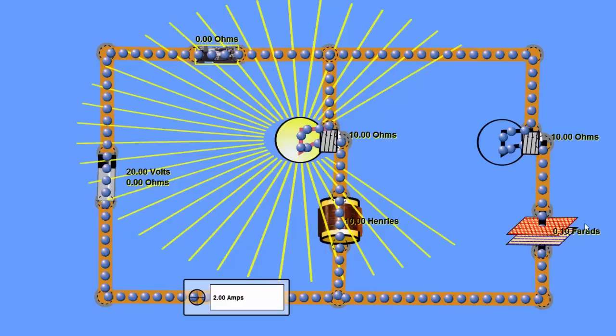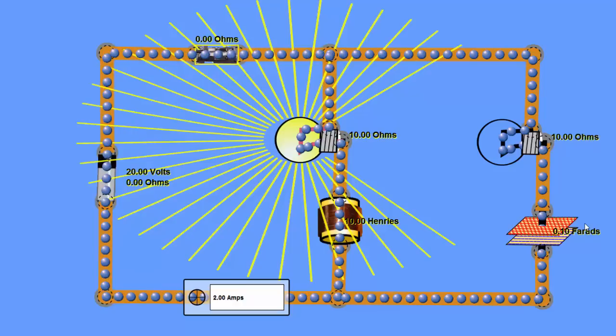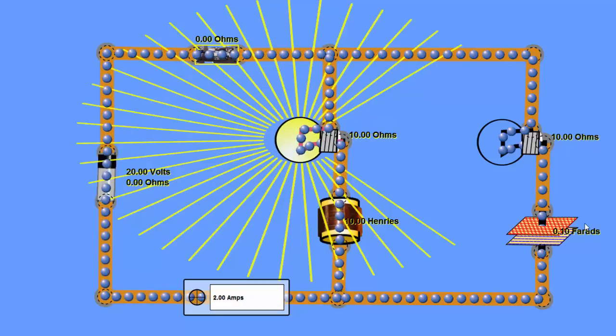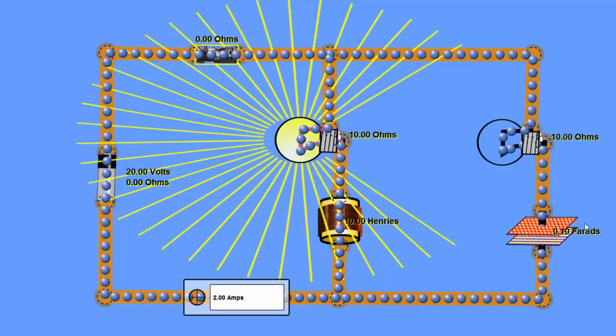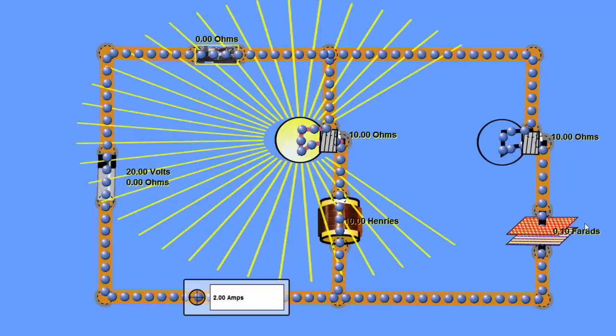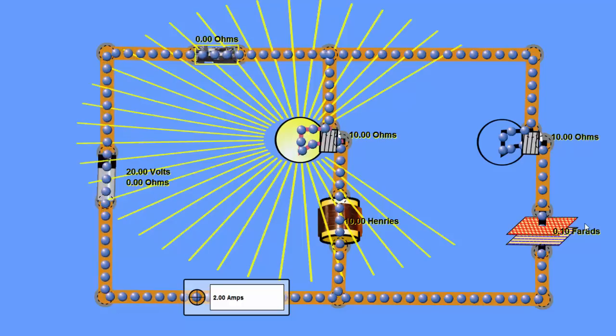One is a short over a long period of time and an open during a short period of time, and the other one has the complete opposite behavior. One is storing energy in the form of kinetic energy due to motion, and the other one's storing energy due to the position of electrons on these plates. So I hope you found this useful.